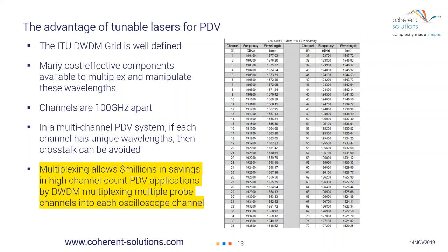On the previous slide, I mentioned the ITU grids — here I show them in their complete table. You can find these online by searching for ITU grid and DWDM. You can see the wavelengths in nanometers and the frequencies. By using DWDM components, it's possible to save a lot of money by reducing the number of scope channels you need in order to have multiple channels in PDV.